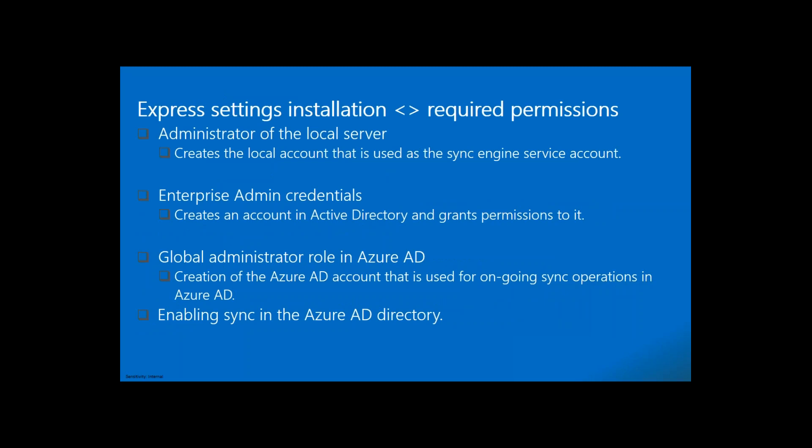Next we'll look at the installation process. There are two types of installation: Express Settings and Customized. Express is where Microsoft predefines all settings required for an organization to sync up to cloud — you only need to provide your on-premises and cloud credentials and everything is done behind the scenes. For express installation you need an on-premises administrator and a cloud Global Administrator. One server is required with internet access on ports 443 and 80 — 443 for traffic and 80 for certificate validation only.